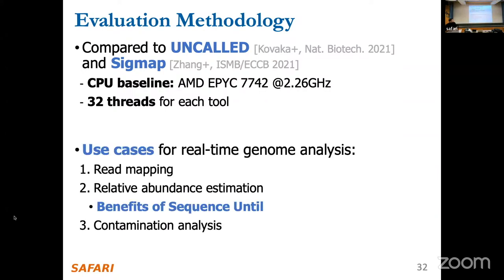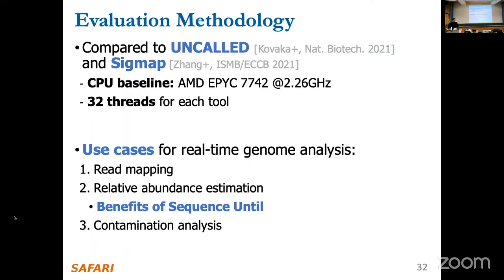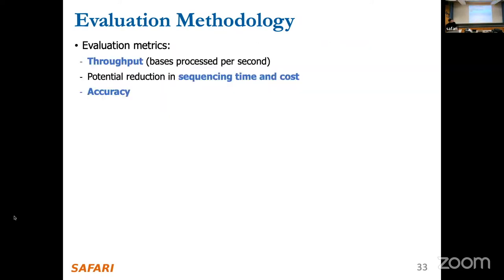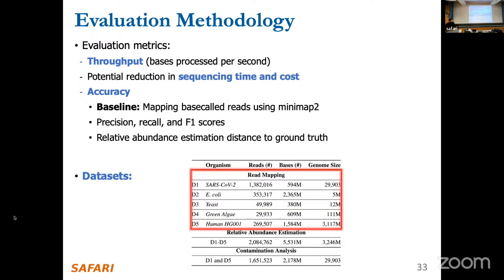We use a CPU with 32 threads. We have three use cases: read mapping, relative abundance estimation (estimating the presence of each genome in a sample), and contamination analysis (identifying whether a sample is contaminated with a particular genome). Evaluation metrics include throughput — the number of bases processed per second, where higher throughput than the device's throughput of ~450 bases per second is required for real-time analysis — as well as potential reduction in sequencing time and cost from early stopping, and mapping accuracy. Our baseline is a very accurate tool that maps base-called reads. We use five real datasets of varying sizes: viral genomes, bacterial genomes, and a human genome.